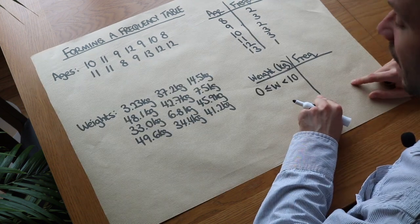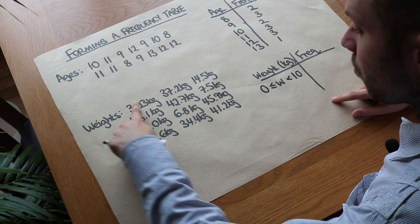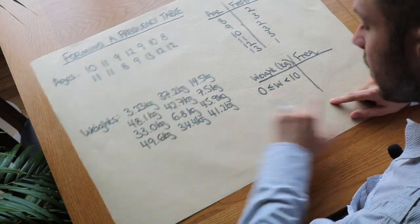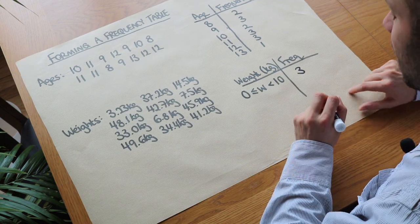So let's see how many people had a weight between zero and ten. Well yes, one, two, three. So three people had a weight between zero and ten kilograms.